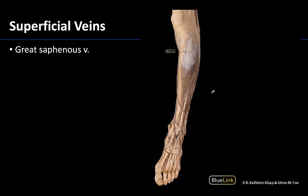The longest superficial vein — and it's pretty hard to miss — is the great saphenous vein, sometimes called the greater saphenous vein. When you think about the great saphenous vein, think medial. Medial is key. Chances are if you see a superficial vein in a medial position, it is the great saphenous vein, because it will run throughout the entire length of the lower limb, making it quite an important and dominant superficial vein.